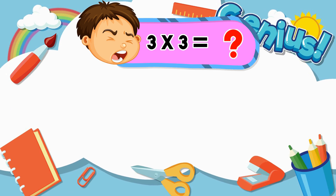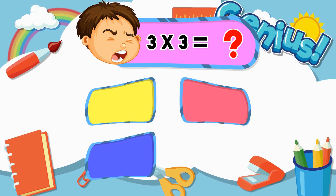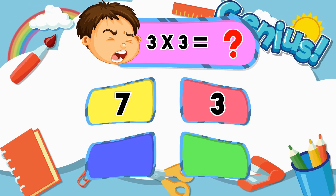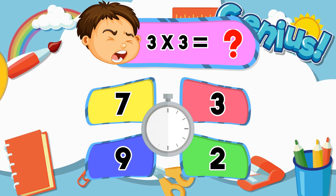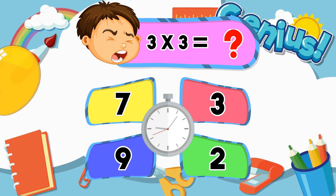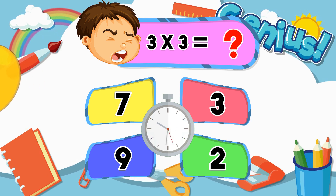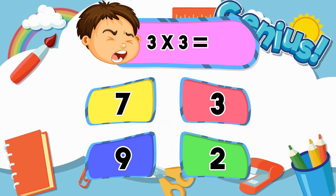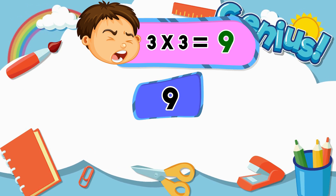What is 3 times 3? 7, 3, 9, 2. [Answer:] 9.